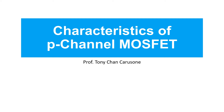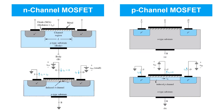In this video, we'll look at the characteristics of the p-channel MOSFET. Here we show an n-channel and p-channel MOSFET side by side. We'll call these nMOS and pMOS devices for short. Both have a gate region that's conducting and separated from the channel region by a thin insulator, silicon dioxide in the case of silicon transistors.